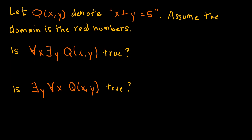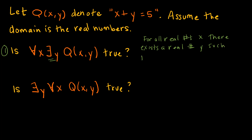Now let's take a look at a different example. Let q(x,y) denote x plus y equals 5, with the domain of all real numbers. Our first statement asks: for all real numbers x, does there exist a real number y such that x plus y equals 5? It's really important to understand the 'for all' and 'there exists' here — this is saying: for every single real number, does there exist some other number such that when we add them together, we get 5? And of course, this statement is true.